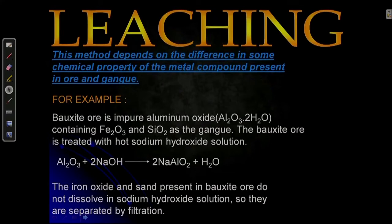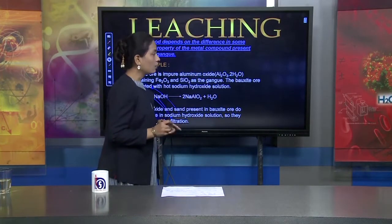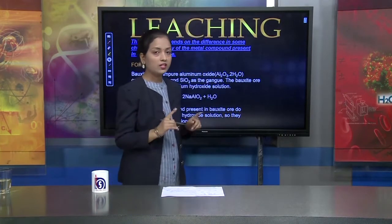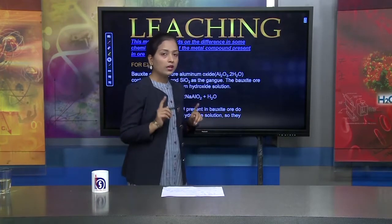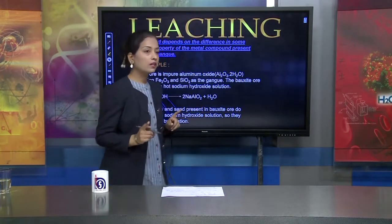The last one is the leaching process. This is a very important process — many times in your examination, questions are asked on this topic: What is the leaching process? Why do we use it? What is the process of roasting? What is the difference between roasting and calcination? Why do we use a reverberatory furnace for both calcination and roasting? I hope you know the answer — those who do can comment.